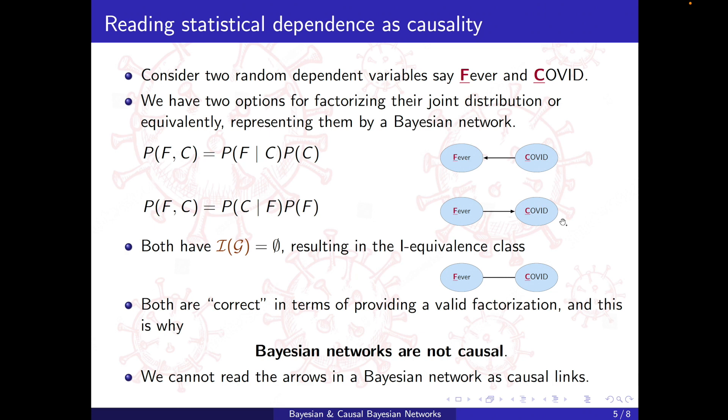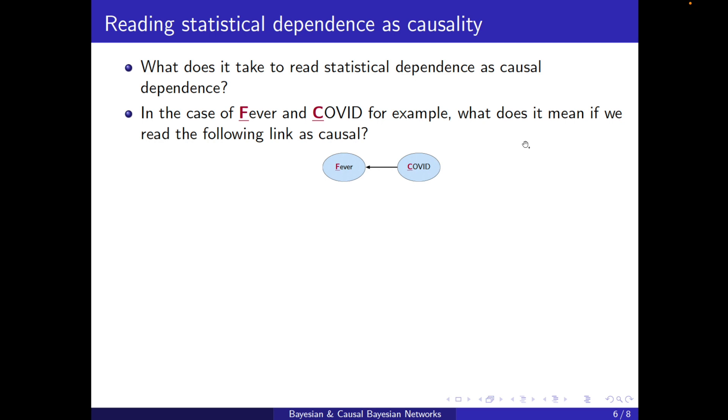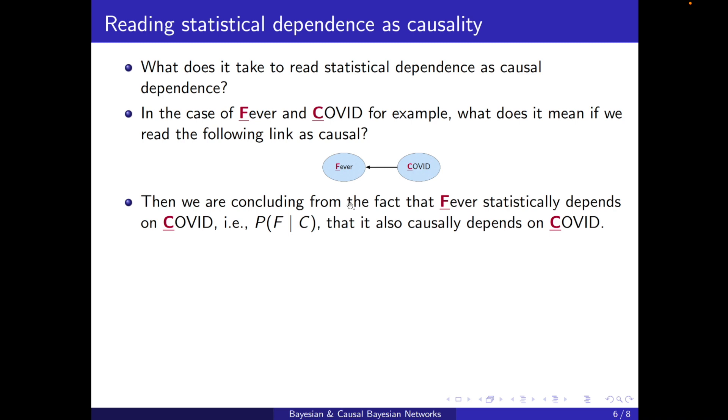So what does it take to read statistical dependence as causal dependence then? For example, in the case of fever and COVID, what does it mean if we read the following link as causal? Then we are concluding from the fact that fever statistically depends on COVID, that it also causally depends on COVID.